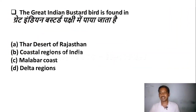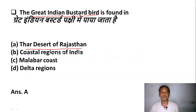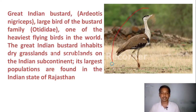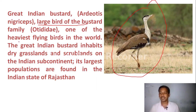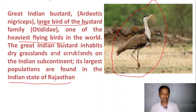The Great Indian Bustard bird is found in — Option A: Thar Desert of Rajasthan, Option B: coastal regions of India, Option C: Malabar Coast, Option D: delta regions. The correct answer is Option A, Thar Desert of Rajasthan. The Great Indian Bustard is a large bird of the bustard family and one of the heaviest flying birds.